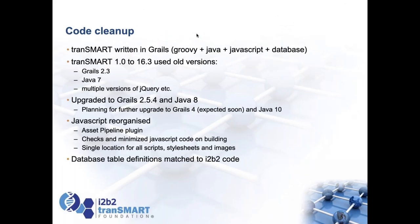The code cleanup: TranSMART is written in Grails, meaning there are multiple languages under the hood — Groovy, Java, JavaScript, and database definitions. From version 1.0 to the latest, everything used Grails 2.3 with Java 7, which is obsolete. The Harvard team upgraded it to Grails 2.5, which uses Java 8. To get to Java 10 or 11 we need Grails 4, which isn't out yet — but most of the work in TranSMART 19 is exactly what's needed to then move to Grails 4.0, so that future step should not require too much extra effort.